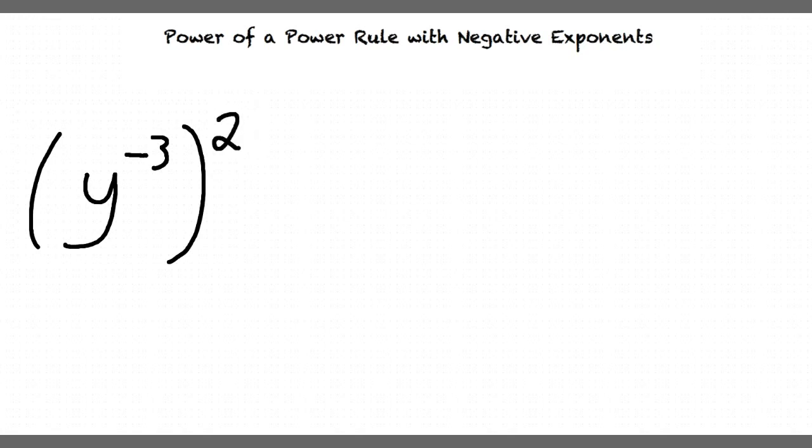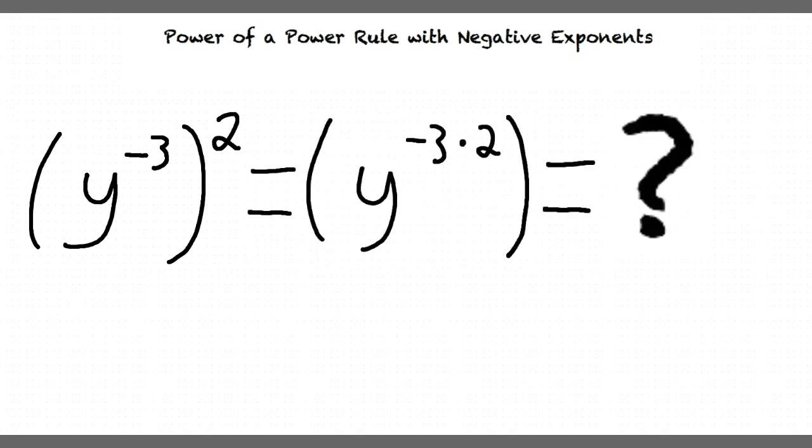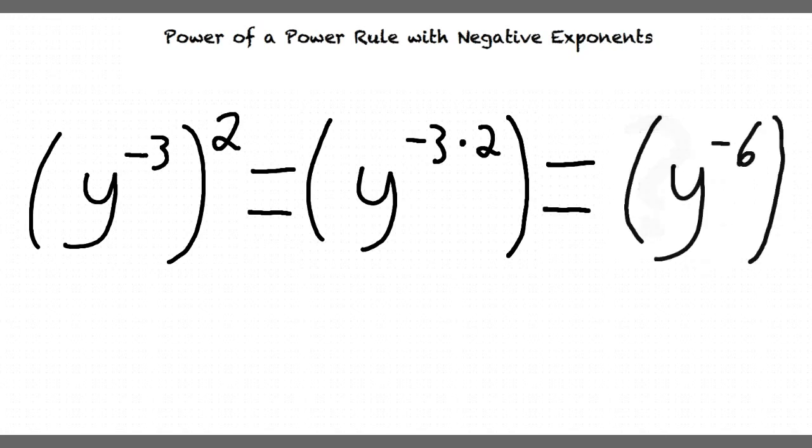The first step to solve this problem would be to multiply negative 3 and 2, right? Exactly. What is our solution so far? y to the negative 6 is our answer. That's right. y to the negative 3 times 2 equals y to the negative 6.